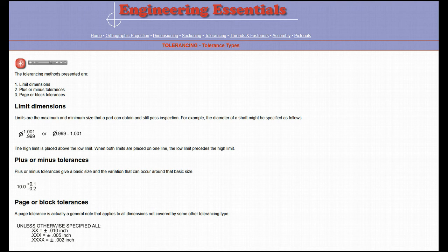Another form of tolerancing is GD&T, geometric dimensioning and tolerancing. GD&T is a subject onto itself and will be left for a later discussion.